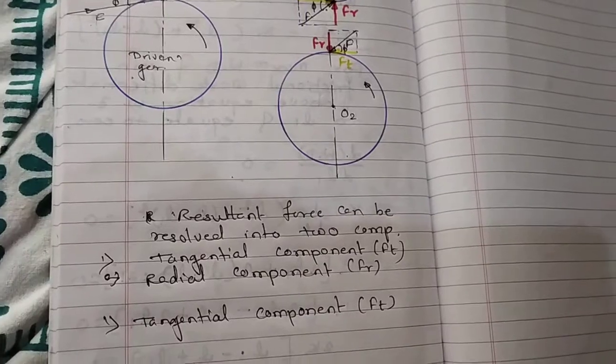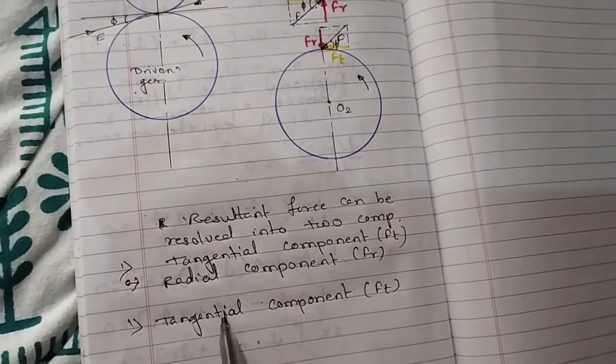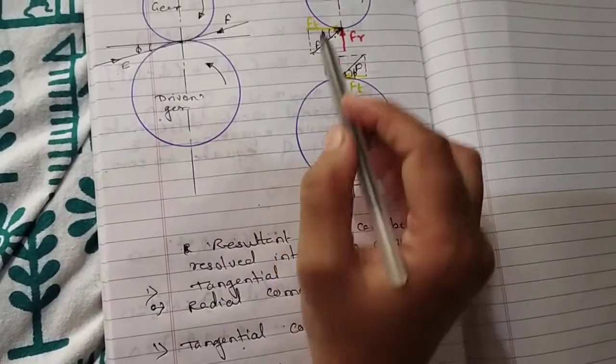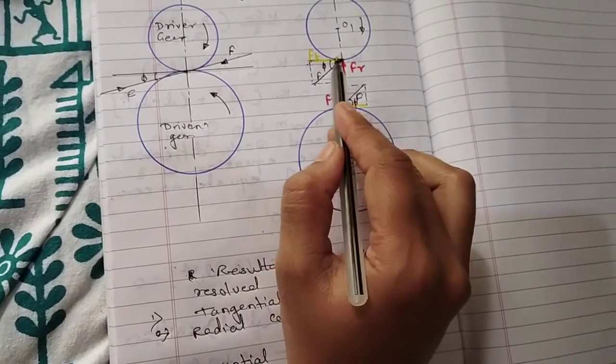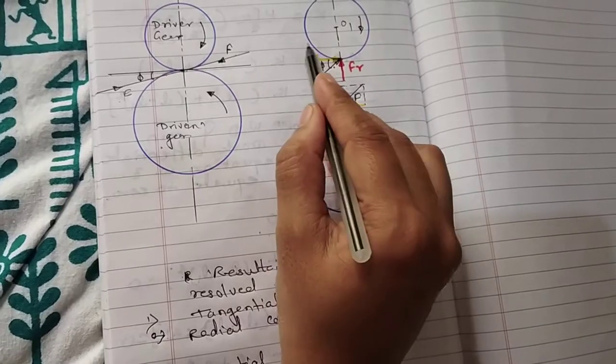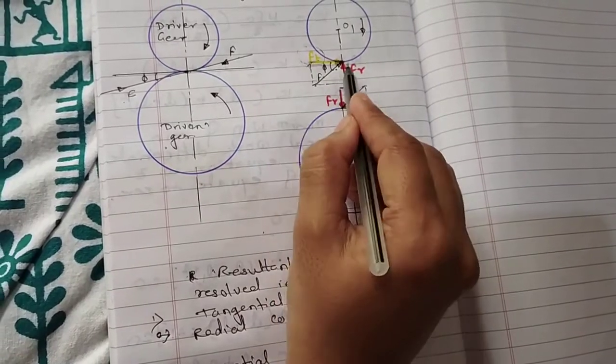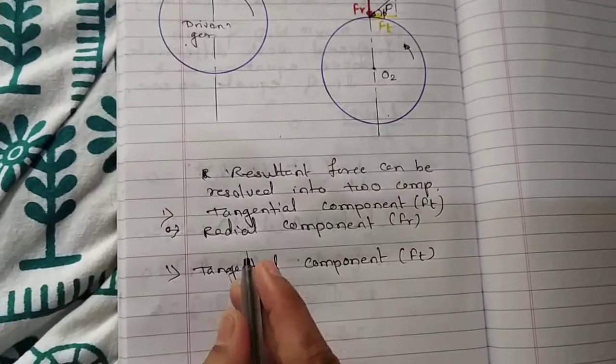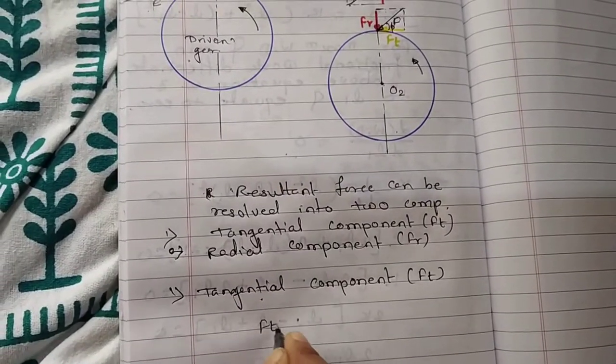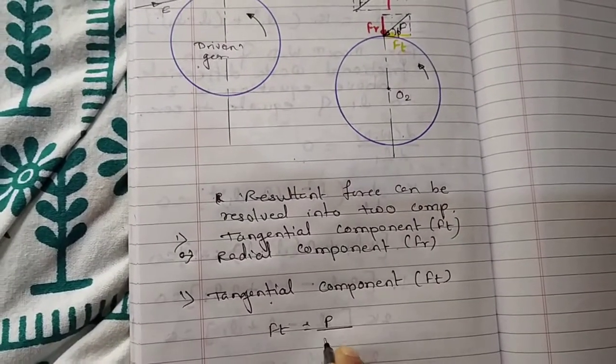Let's discuss these two components. First is the tangential component. This is the tangential component which acts along the tangent. This is a very important component which will help to transmit motion and power. We can calculate this tangential component using the equation of power.